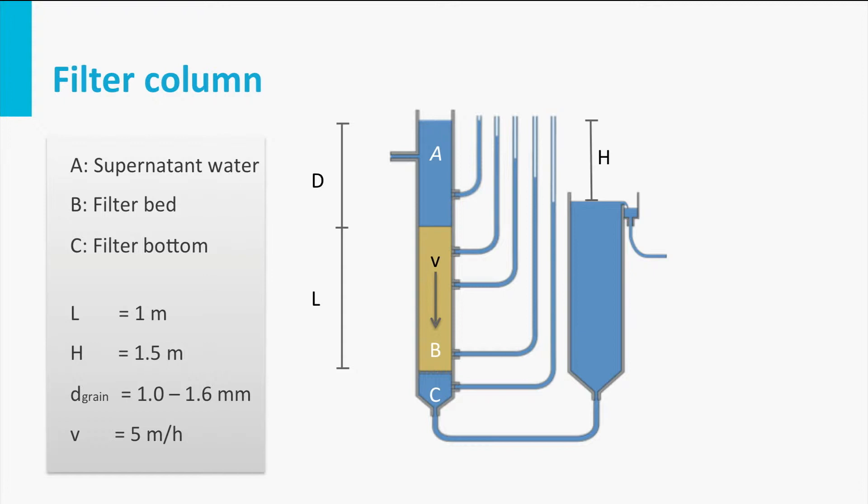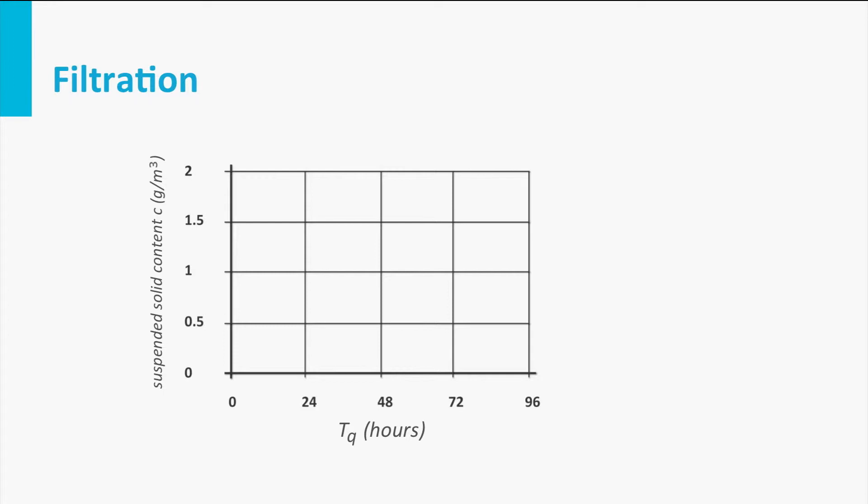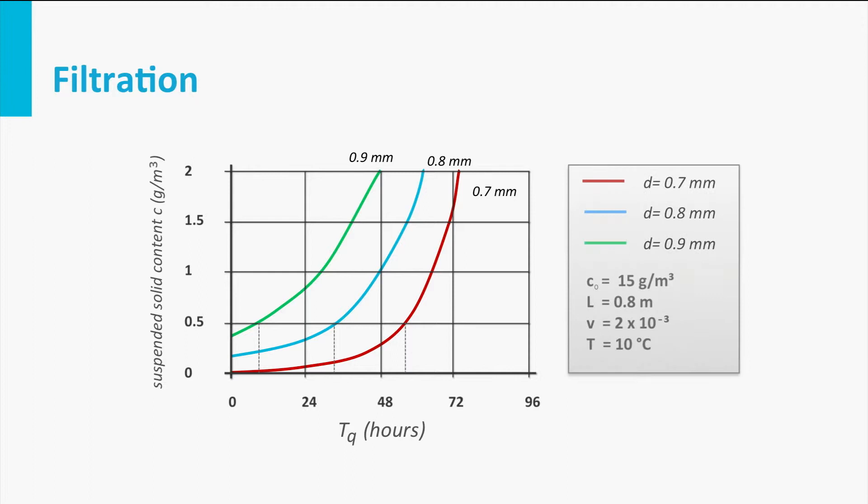When grain size is tested, it can be concluded that effluent water quality deteriorates over time, but smaller grain sizes perform better than larger grain sizes. Filtration can be performed until the maximum allowable effluent concentration is reached.